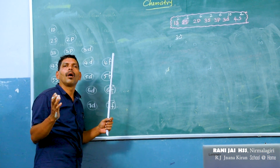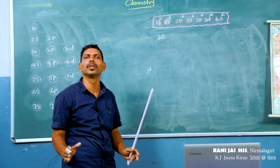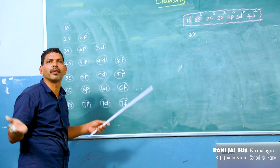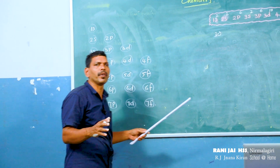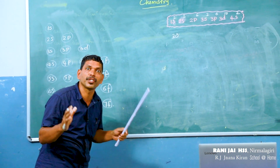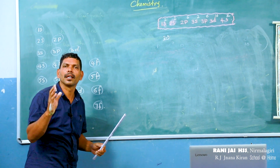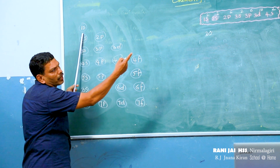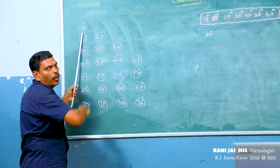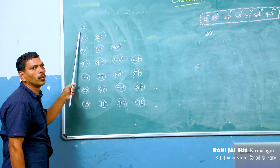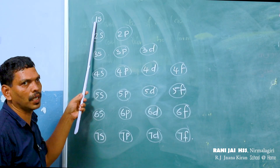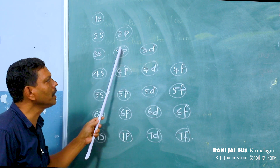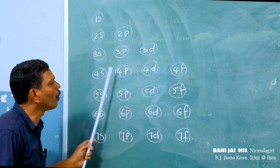Elements exist from atomic number 1 to 118. For atomic numbers 50, 26, 35, and 79, how does the electronic configuration look in extended order? Look here — the extended order is: 1s, 2s, 2p, 3s, 3p, 3d, then 4s, 4p, 4d, 4f.